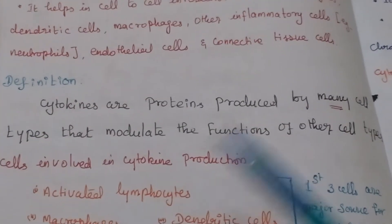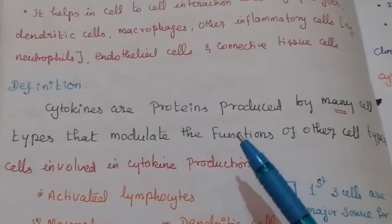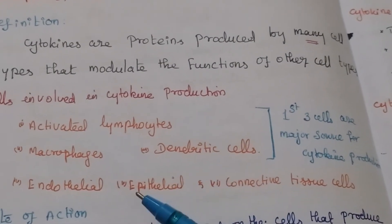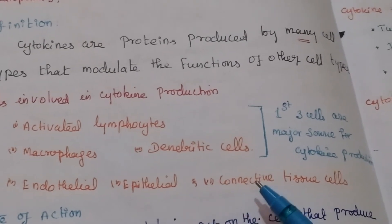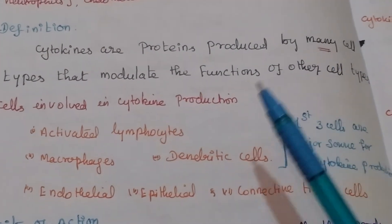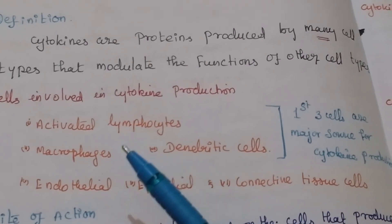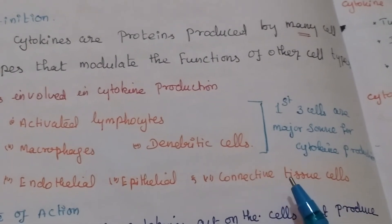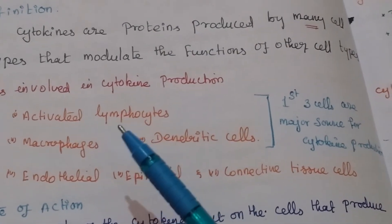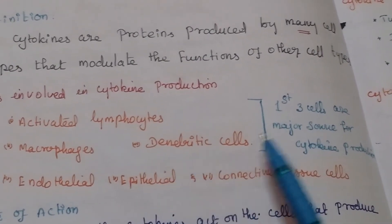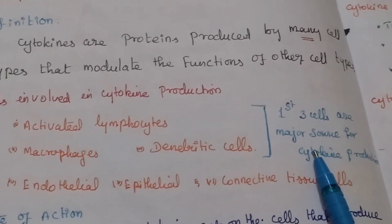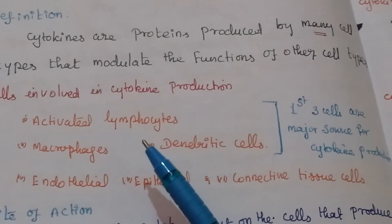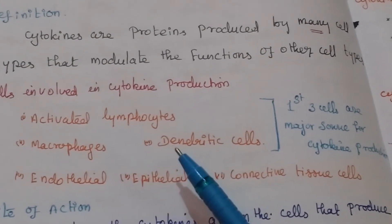The cells involved in cytokine production include: activated lymphocytes, macrophages, dendritic cells, endothelial cells, epithelial cells, and connective tissue cells. Among these, activated lymphocytes, macrophages, and dendritic cells are the major sources for cytokine production.